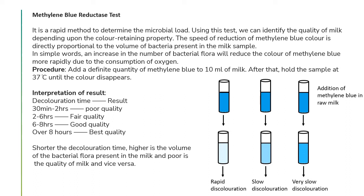The next test is the methylene blue reductase test. It is a rapid method to determine the microbial load and identify the quality of milk depending upon the color-retaining property. The speed of reduction of methylene blue color is directly proportional to the volume of bacteria present in the milk. An increasing number of bacterial flora will reduce the color of methylene blue more rapidly due to the consumption of oxygen present in the media.